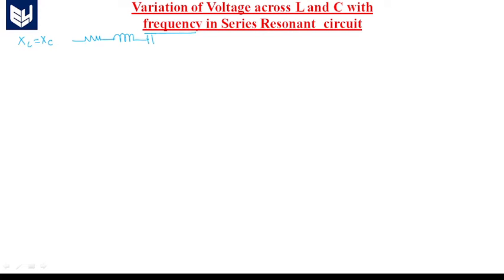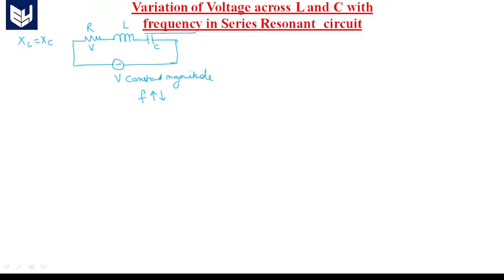A voltage source is connected to the circuit, and this voltage source has a constant magnitude but the frequency is varying — either increasing or decreasing. So frequency is variable. This one is R, L, and this is C. The voltage across resistance is VR, the voltage across the inductor is VL, and the voltage across the capacitor is VC.